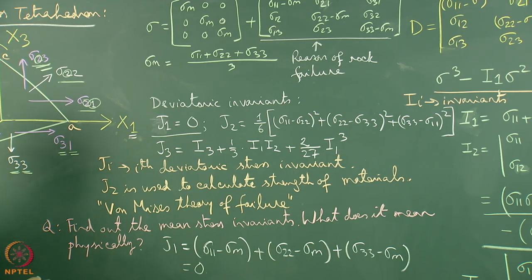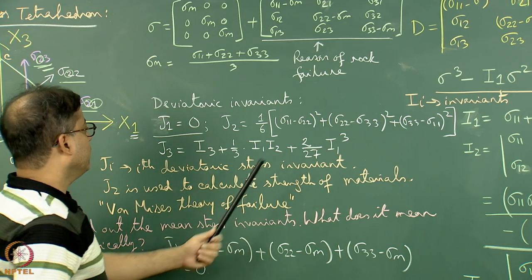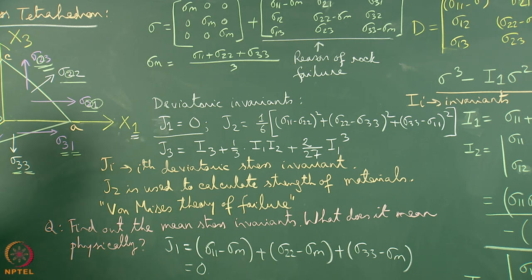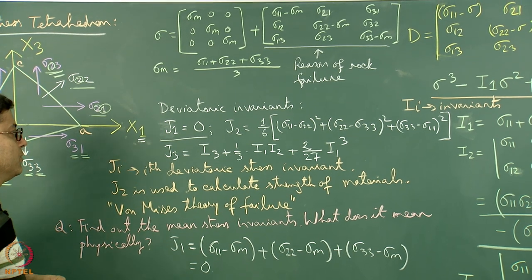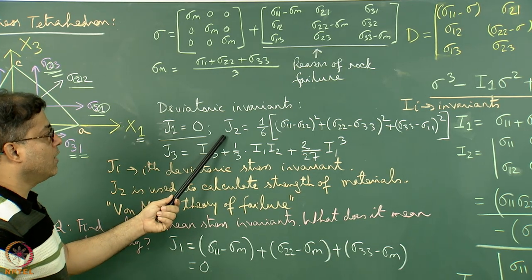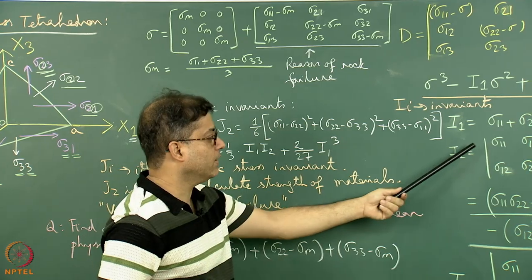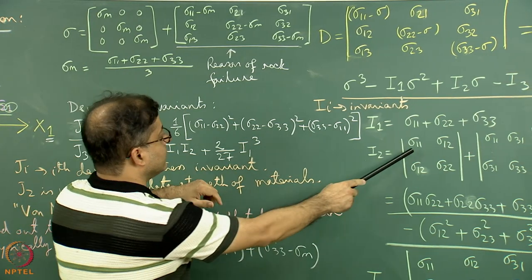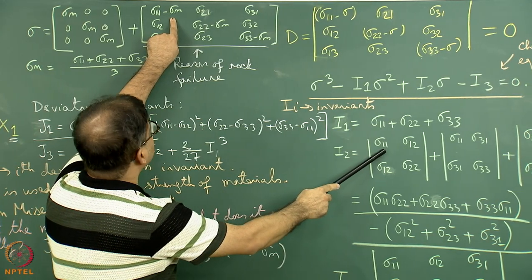ji is called the ith deviatoric stress invariant, so j1 is called the first deviatoric stress invariant, which is always equal to 0. Now similarly, if I find out j2, you can look at the i2 form here. I will replace sigma 11 by sigma 11 minus sigma m.